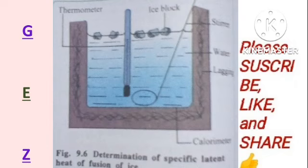You have a copper calorimeter with a stirrer — first weigh it empty, then weigh it when it is about half full with water at about 5 degrees Celsius above room temperature. The exact temperature is read and recorded. Some small ice blocks are dried with blotting paper and then added to the water in the calorimeter. The mixture is gently and continuously stirred, and each piece of ice is allowed to melt completely before the next one is added.